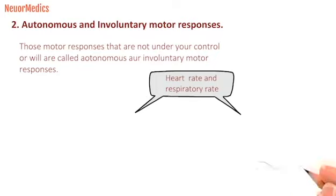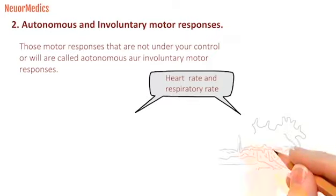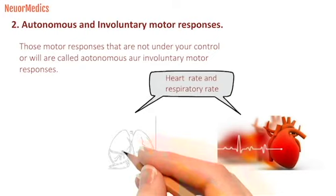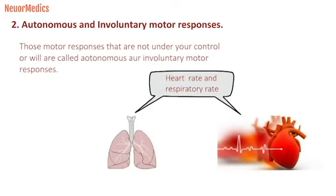All the motor responses are categorized as voluntary or involuntary motor responses. Voluntary motor responses are also called somatic, and involuntary motor responses are also called autonomic motor responses. An example of somatic motor responses is movement of your hand. The breathing process — the breaths that we are taking right now — is an example of involuntary motor response.